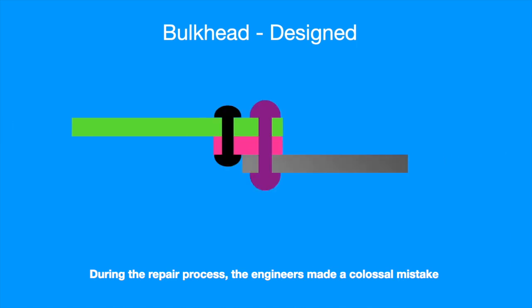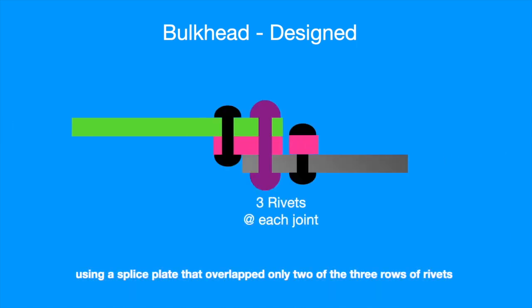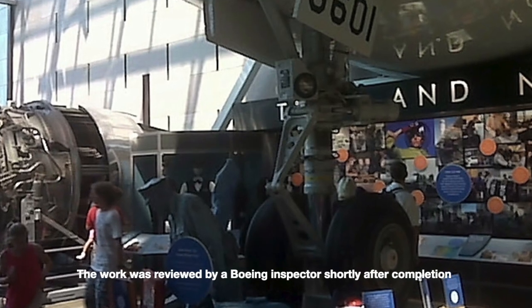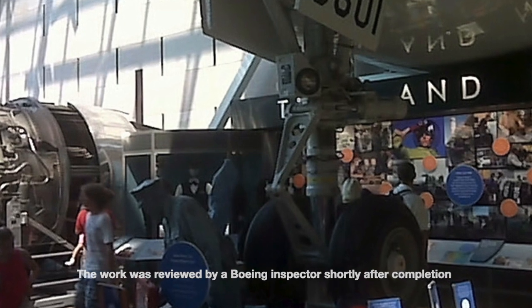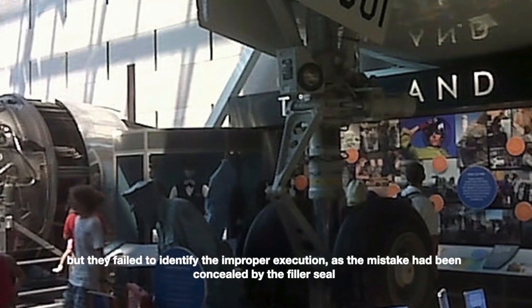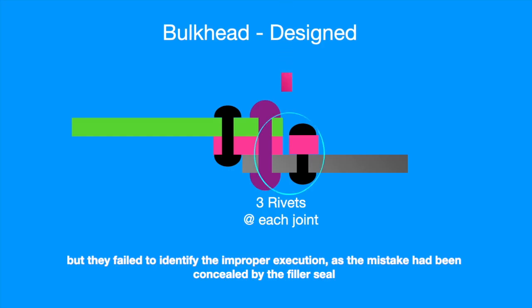During the repair process, the engineers made a colossal mistake by using a splice plate that overlapped only two of the three rows of rivets. The one lonely row caused a gap and a filler plate was used to close it but it was not serving any functional purpose other than filling the gap. The work was reviewed by a Boeing inspector shortly after completion but they failed to identify the improper execution as the mistake had been concealed by the fillet seal.